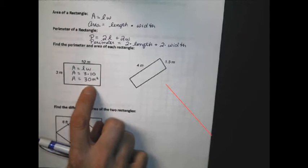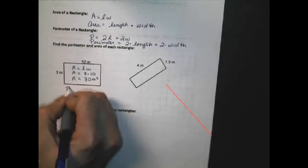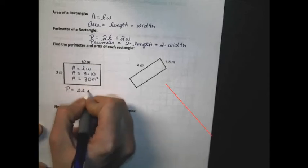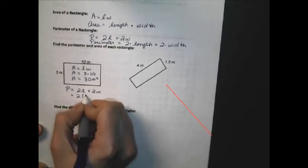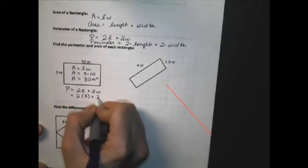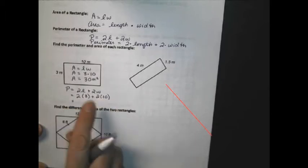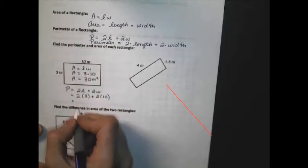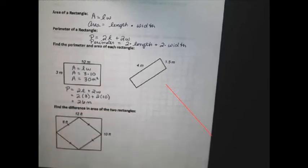To find the perimeter of this rectangle, we use P equals 2L plus 2W, which means 2 times the length of 3 plus 2 times the width of 10. This gives me 6 plus 20, which is 26 meters. Perimeter is simply a distance. Therefore, the units are not squared.